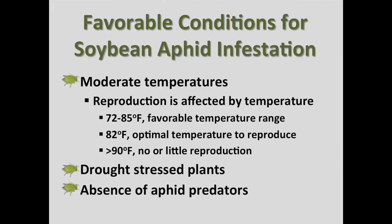Conditions that favor aphid population growth are cool temperatures in the high 70s to low 80s, plant stress like drought stress, and the lack of aphid predators.